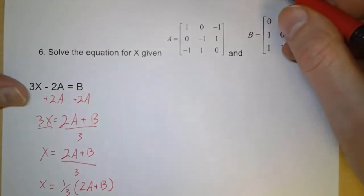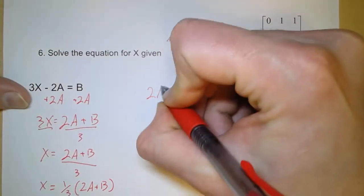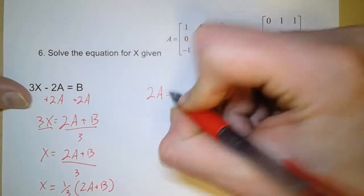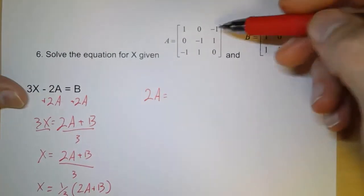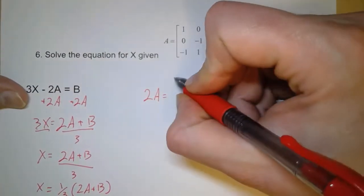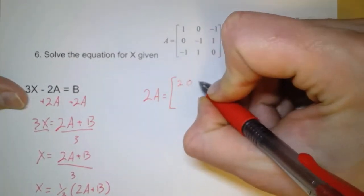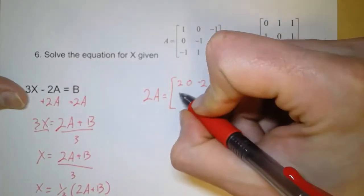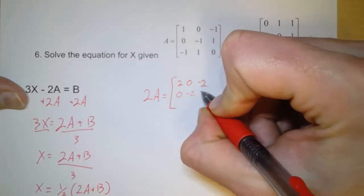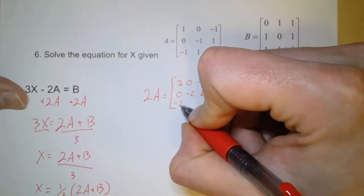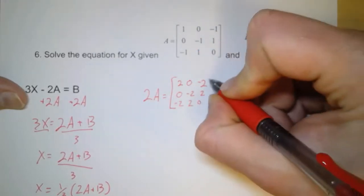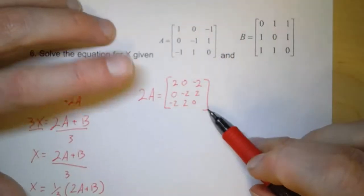So first, let's find 2A. So that means all I do is I just take matrix A and multiply all the values inside by 2. So 2, 0, negative 2. 0, negative 2, positive 2. Negative 2, positive 2, 0. So there's 2A.